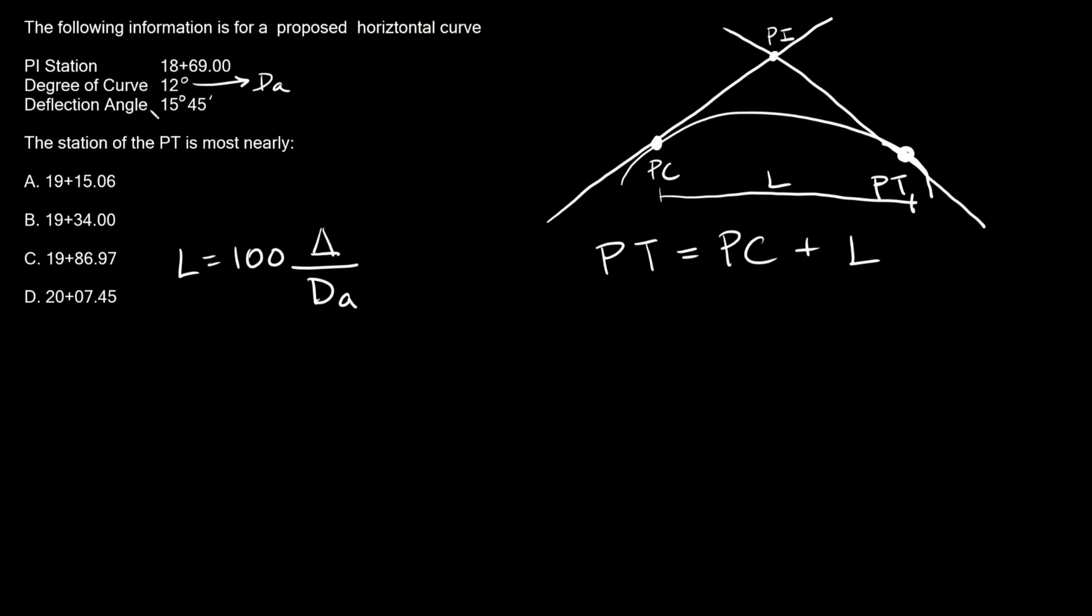So the deflection angle is 15 degrees and 45 minutes. Now whenever you have minutes to convert that to a decimal, all you have to do is divide by 60. So 45 divided by 60 is the same thing as 3 fourths, which is 0.75. So 15 degrees 45 minutes is the same thing as 15.75 degrees.